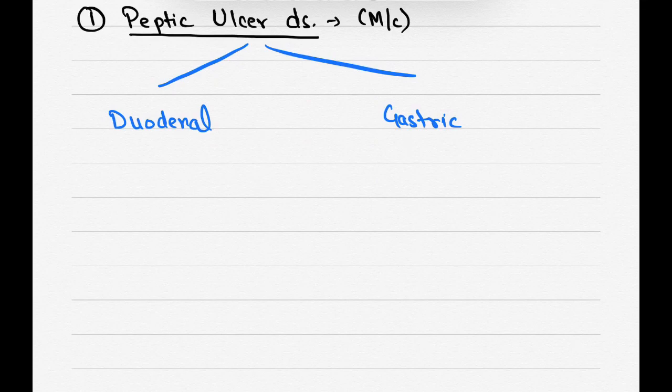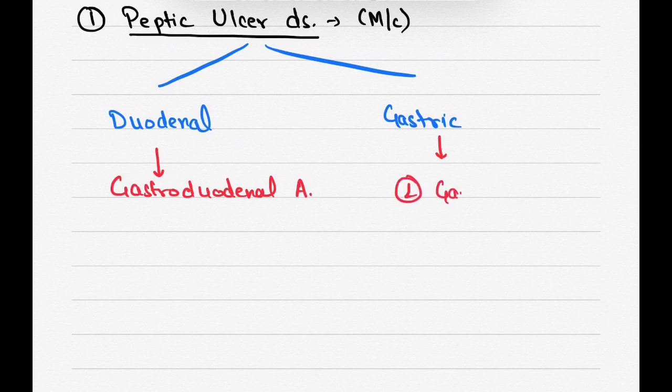The most common artery involved in the duodenal ulcer is gastroduodenal artery, and the most common artery involved in gastric ulcer is left gastric artery. So the investigation of choice in both types of peptic ulcer is upper GI endoscopy and the treatment is cautery.